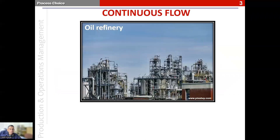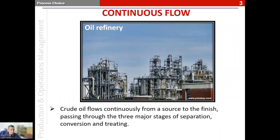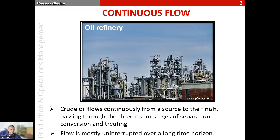To understand the continuous flow, let's look at an oil refinery. In an oil refinery, crude oil continuously flows from a source to the finish, passing through the three major stages of separation, conversion, and treating. The flow of this oil is mostly uninterrupted over a long time horizon, as the oil keeps flowing while it gets refined from the crude stage to a refined stage.